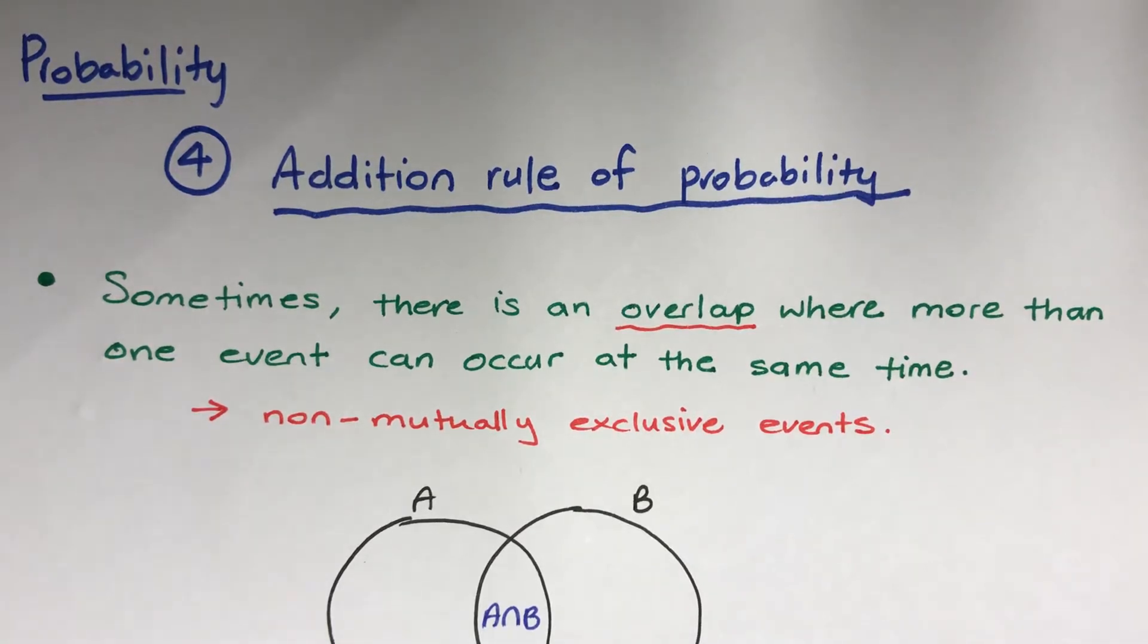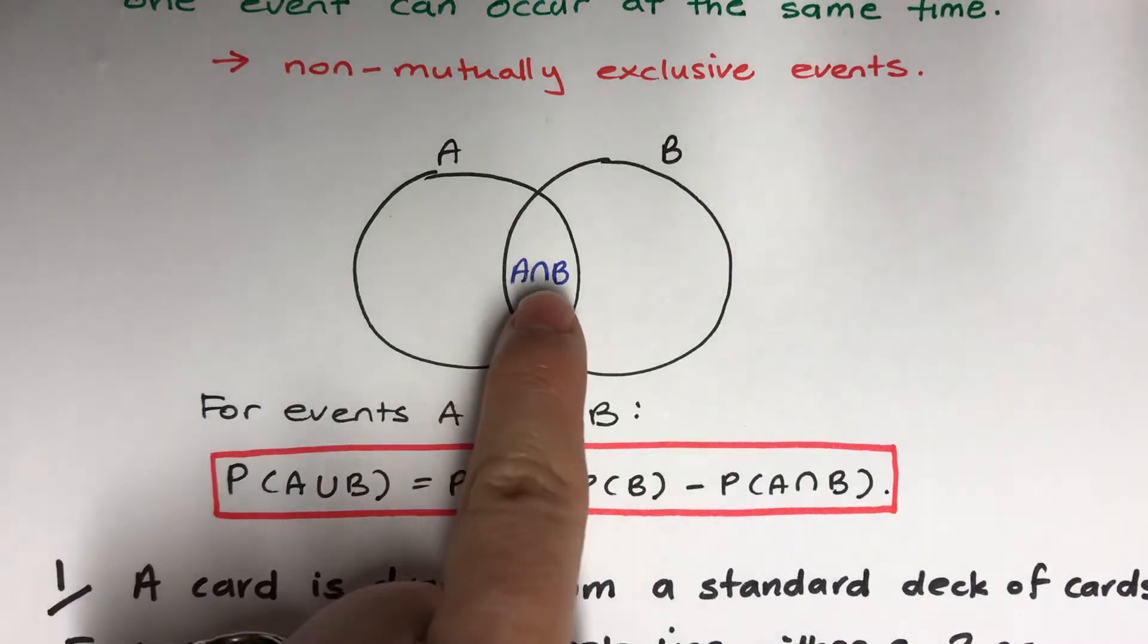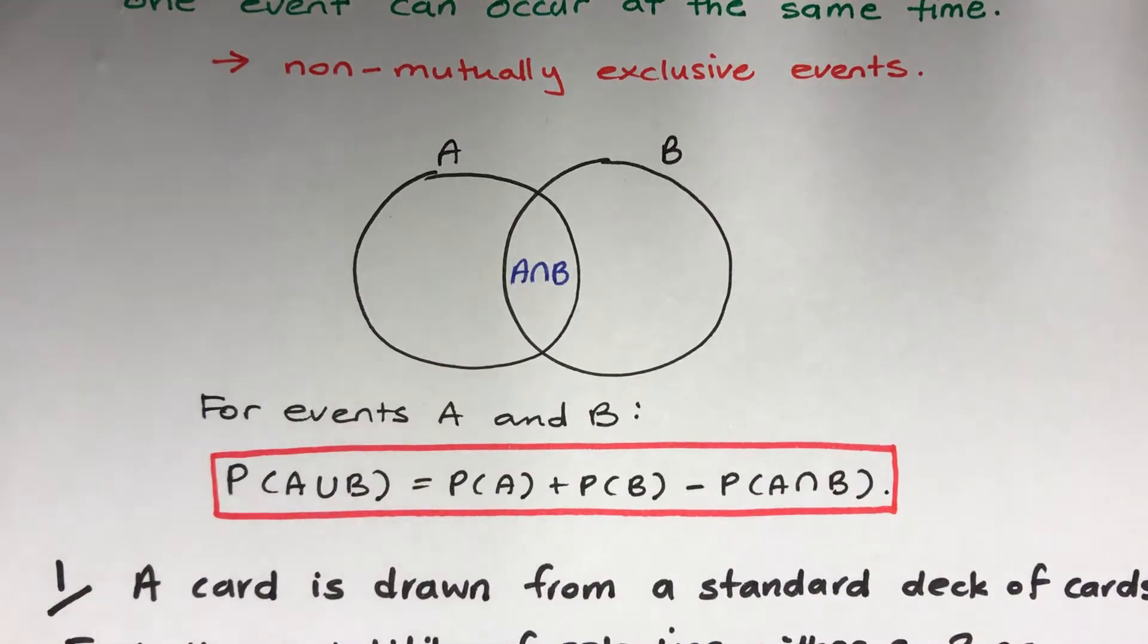Probability, fourth little topic: addition rule of probability. Sometimes there is an overlap where more than one event can occur at the same time. This is obviously talking about non-mutually exclusive events, because mutually exclusive events can't happen at the same time. So that means in a Venn diagram there is a little common part in there. We actually talked about this a little bit in a previous video.